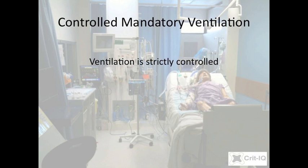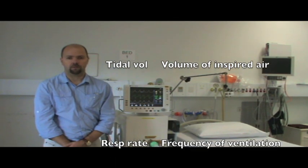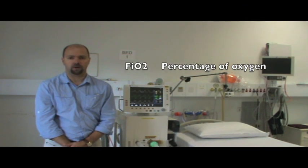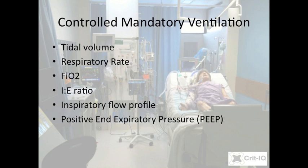In CMV mode, inspiration and expiration occur strictly according to these settings. CMV can be set as follows: the tidal volume — the volume of gas delivered each breath; the respiratory rate — the frequency at which those breaths are delivered; and the FiO2 — the fraction of inspired oxygen. Further settings include the proportion of time spent in inspiration and expiration, the profile of the inspiratory breath, and the PEEP — the pressure applied at the end of respiration. These concepts will be discussed in a moment.